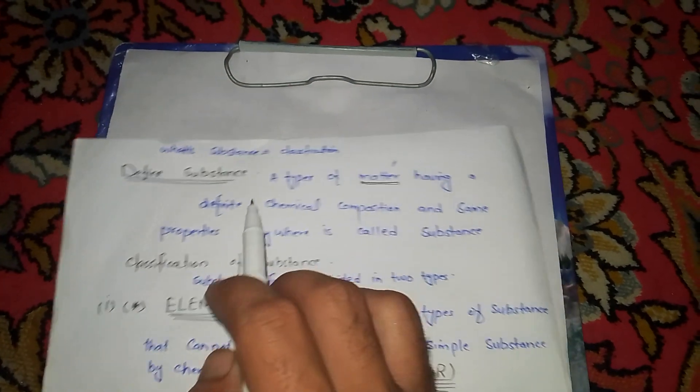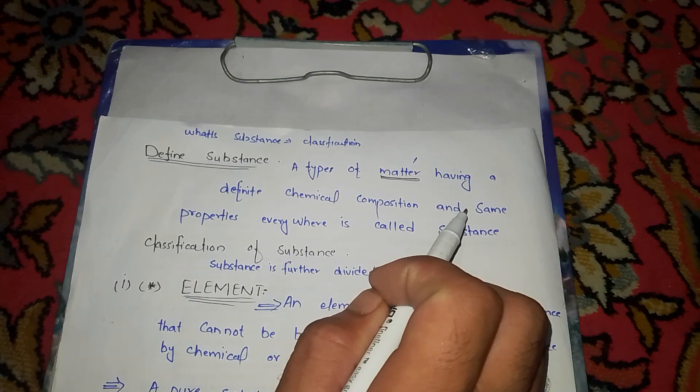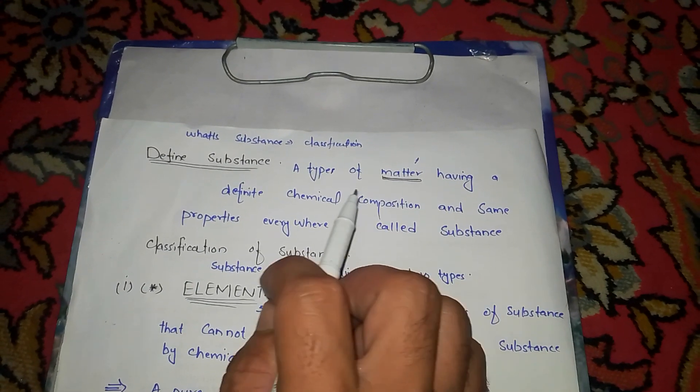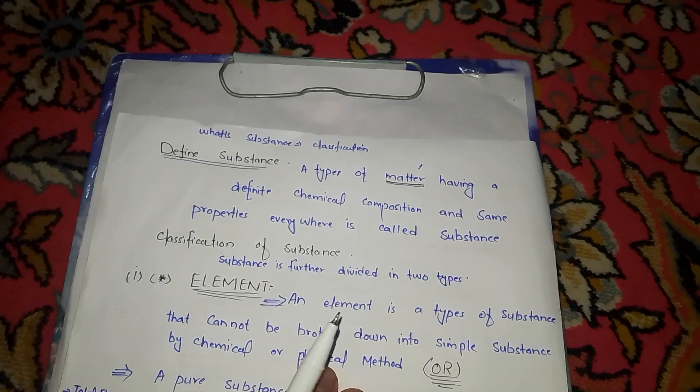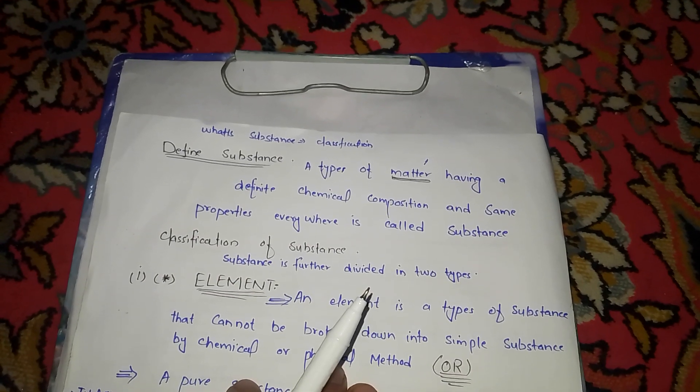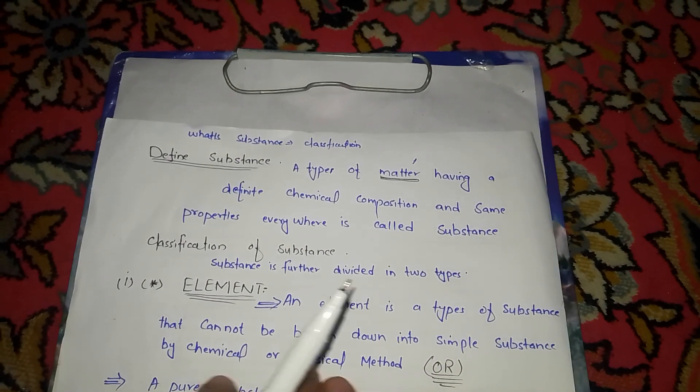Having defined chemical compositions and same properties everywhere is called substances. First of all, you need to know what is matter.